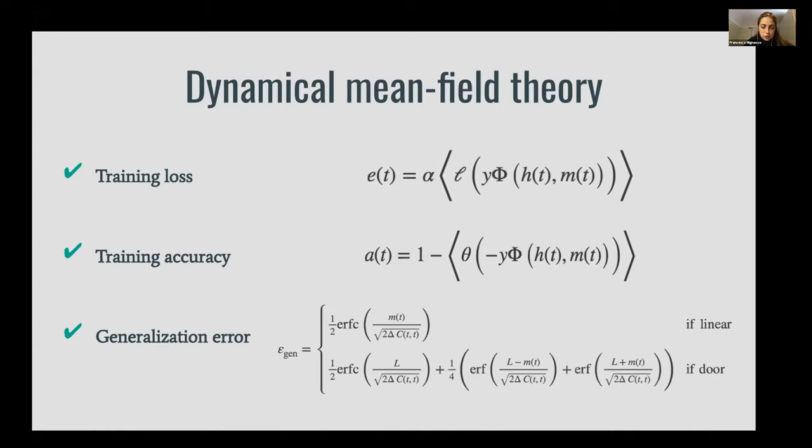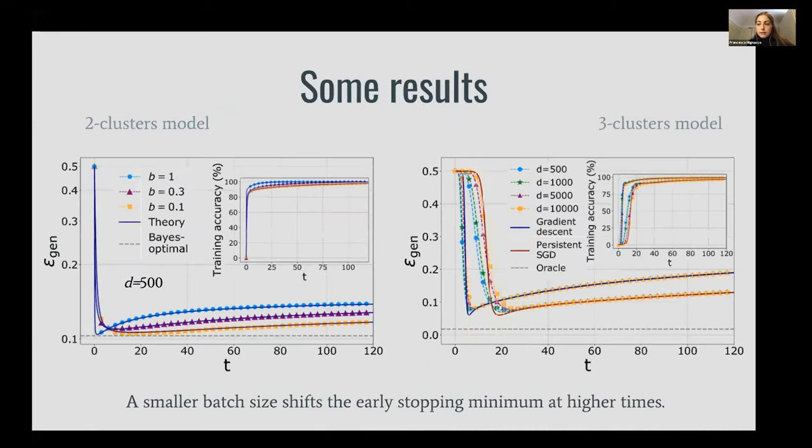We can derive analytic expressions for all of these quantities. Now I will show some results. Our analysis holds for a generic loss function, but in this plot I use the logistic loss. First, we see that dynamical mean field theory is able to track the full trajectory of the generalization error. Here I'm plotting the generalization as a function of training time and training accuracy. We see good agreement with simulations that are done at finite dimensions, ranging from 500 to 10,000. We also observe that a small batch size has the effect to shift the early stopping minimum of the generalization error at higher times, and in this time window a small batch size improves the generalization performance.